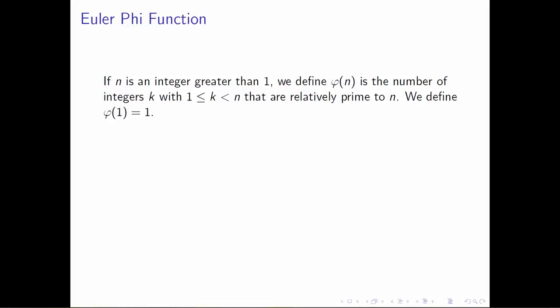This process is done so frequently in abstract algebra and number theory that Euler created his own notation to represent this quantity. He used phi of n to denote the number of integers k between 1 and n that are relatively prime to n. This is called Euler's phi function—sometimes pronounced 'phi,' sometimes 'fi'—just different pronunciations of the Greek symbol. I use both pronunciations, and there's no predicting which one I'll use.